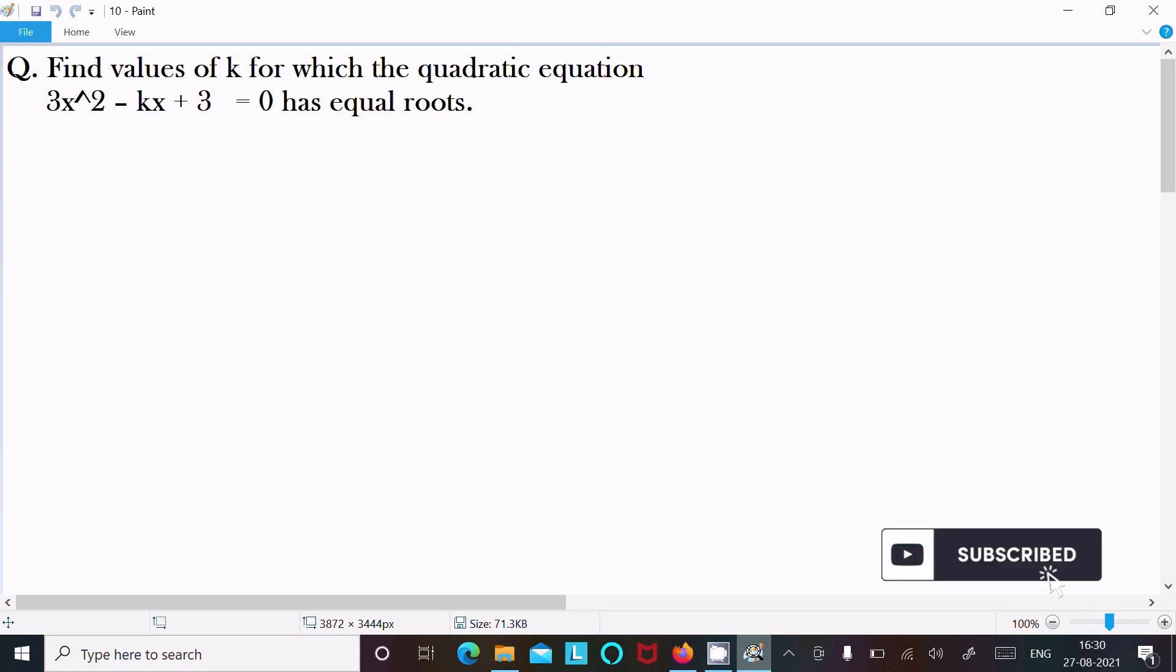To find the value of k for the quadratic equation 3x^2 - kx + 3 = 0, let's see the answer. So first here, writing the quadratic equation: 3x^2 - kx + 3 = 0.